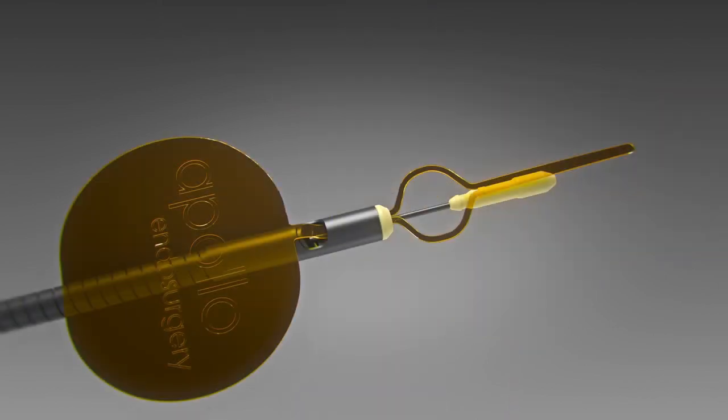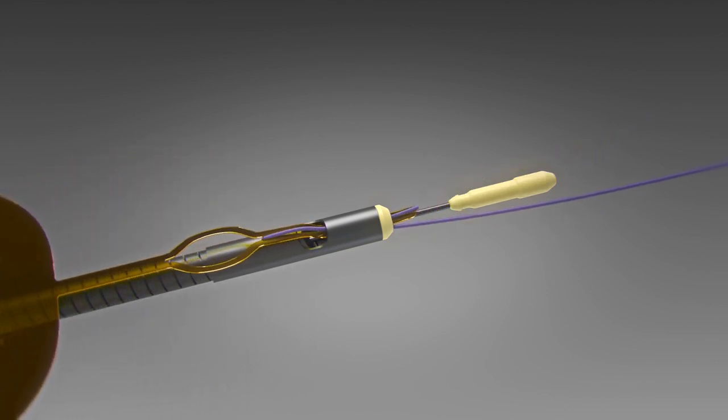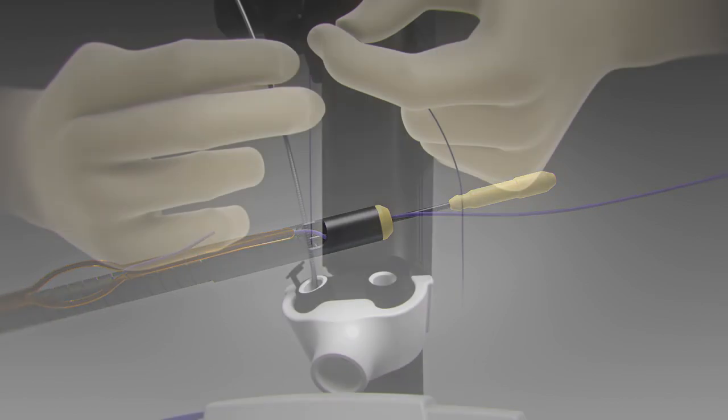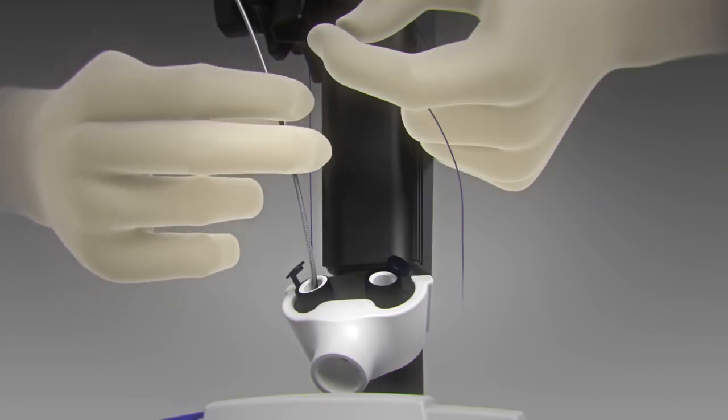To load the cinch, thread approximately 3 centimeters of the distal end of the suture through the gold suture loading loop. Pull the gold tab in line with the catheter until the suture has passed through the peak collar. While holding slight suture tension, insert the cinch into the 3.7 millimeter channel of the scope.